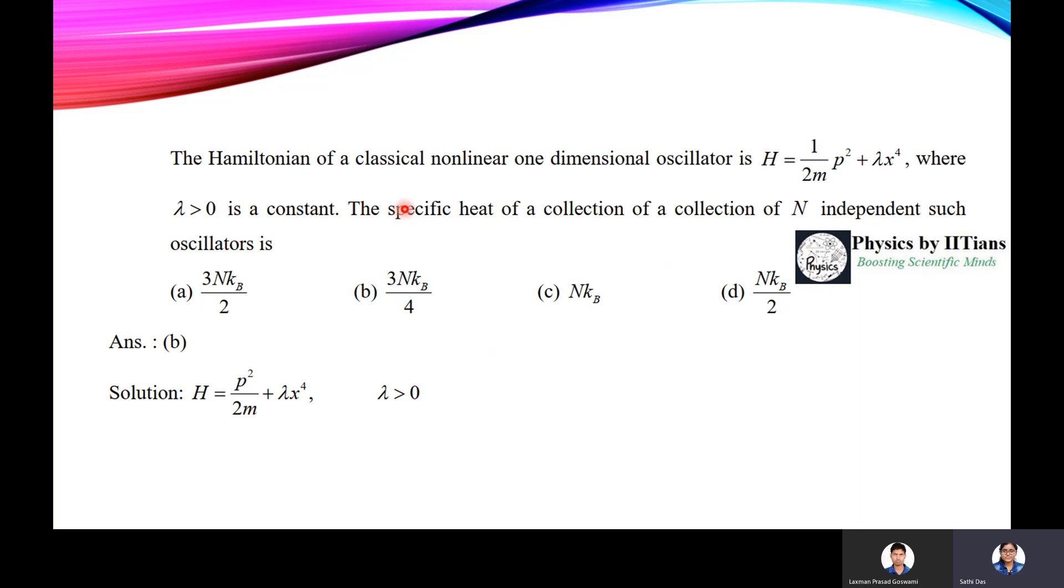Next question, this is a very important question and this kind of question will be repeated, and this lambda x to the power 4 term can be modified as x cube, x square, or x. So be prepared for this kind of question. The Hamiltonian of a classical nonlinear one-dimensional oscillator H equals half 1 by 2m p square plus lambda x to the power 4, where lambda is greater than 0 and is a constant. The specific heat of a collection of N independent such oscillators is 3 by 2 nkb, nkb, 3 by 4 nkb, or half nkb.